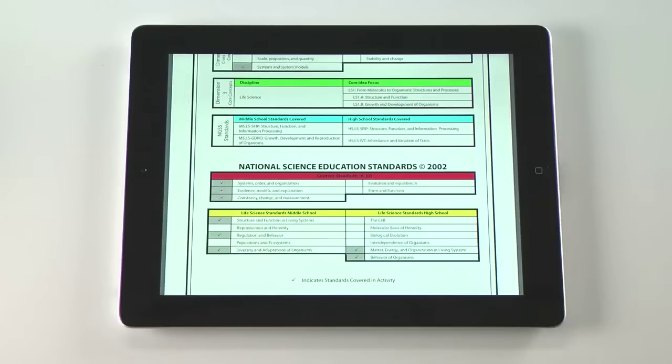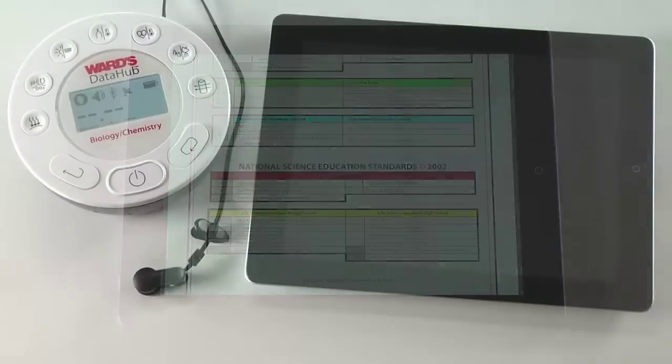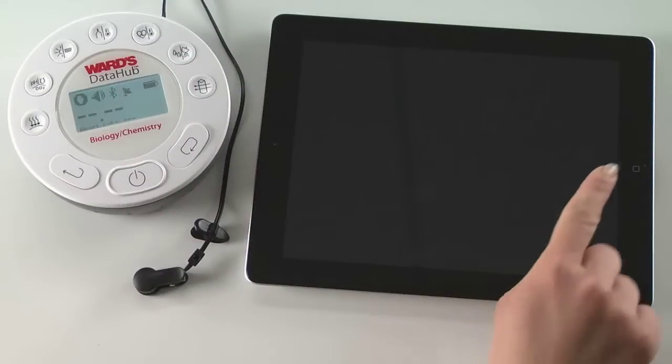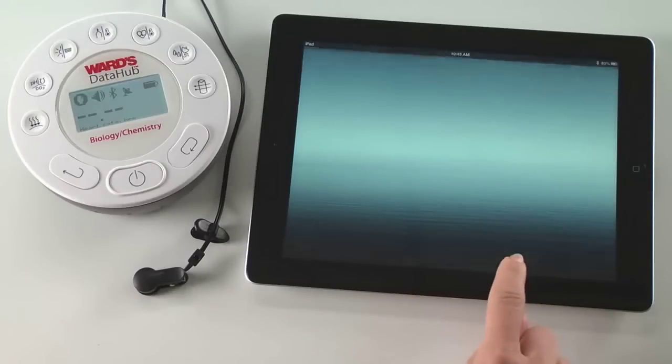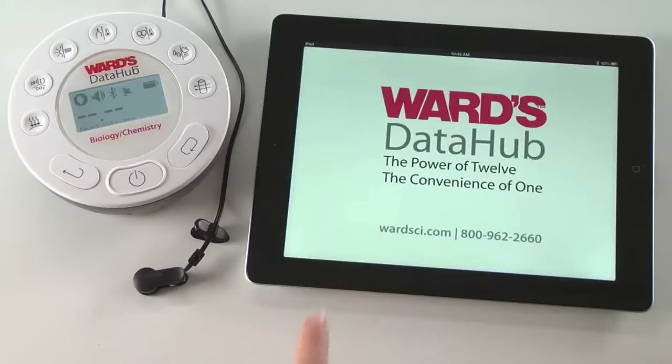We will use the Ward's DataHub software to view real-time data and measure heart rate as a student does exercise in the lab. In just three simple steps, we're ready to begin collecting data.